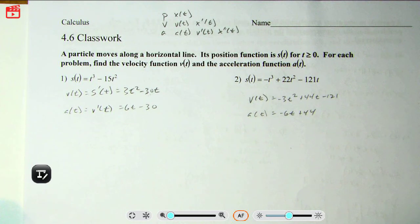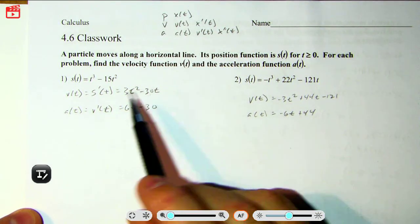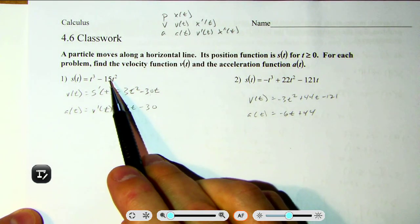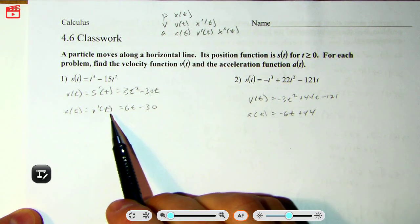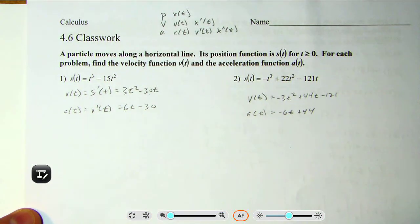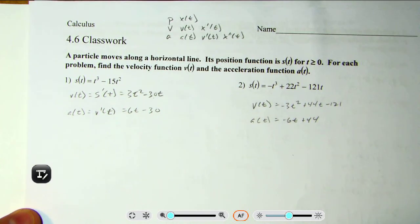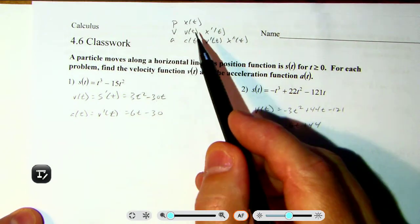Okay, kiddos, two videos for the 4.6 classwork. This one is the easy part—these three here's your position versus time function and they want you to find velocity and acceleration. That's just single and double derivative. Okay, so there's the two answers for one and two.